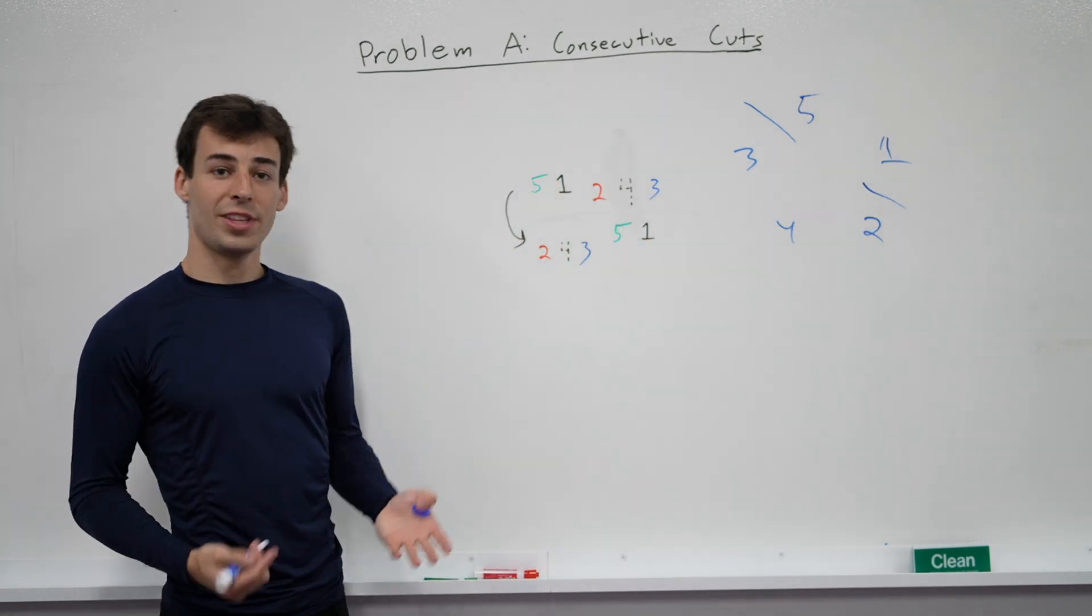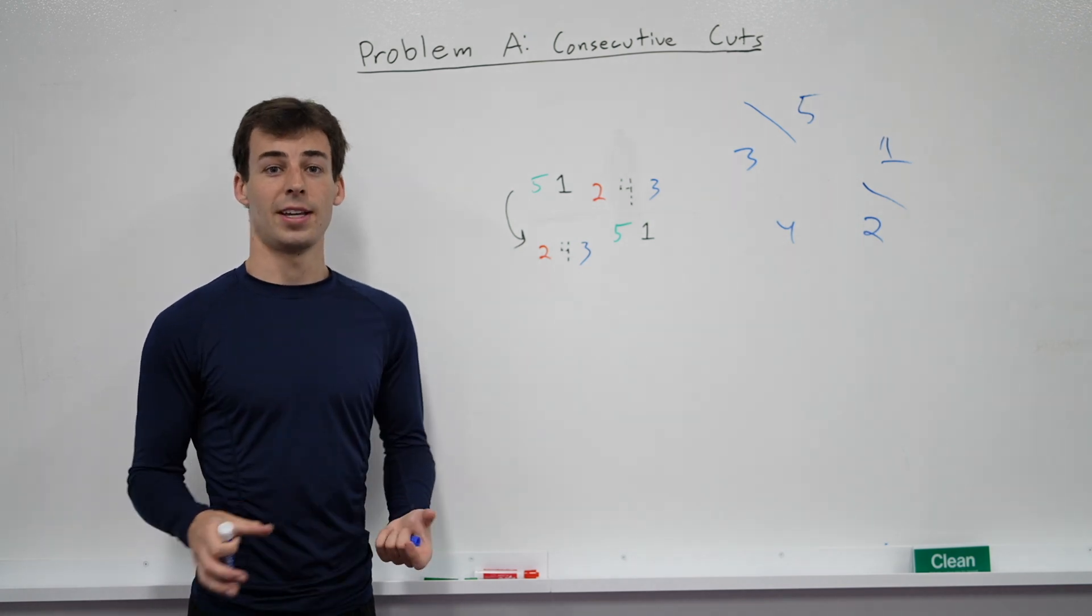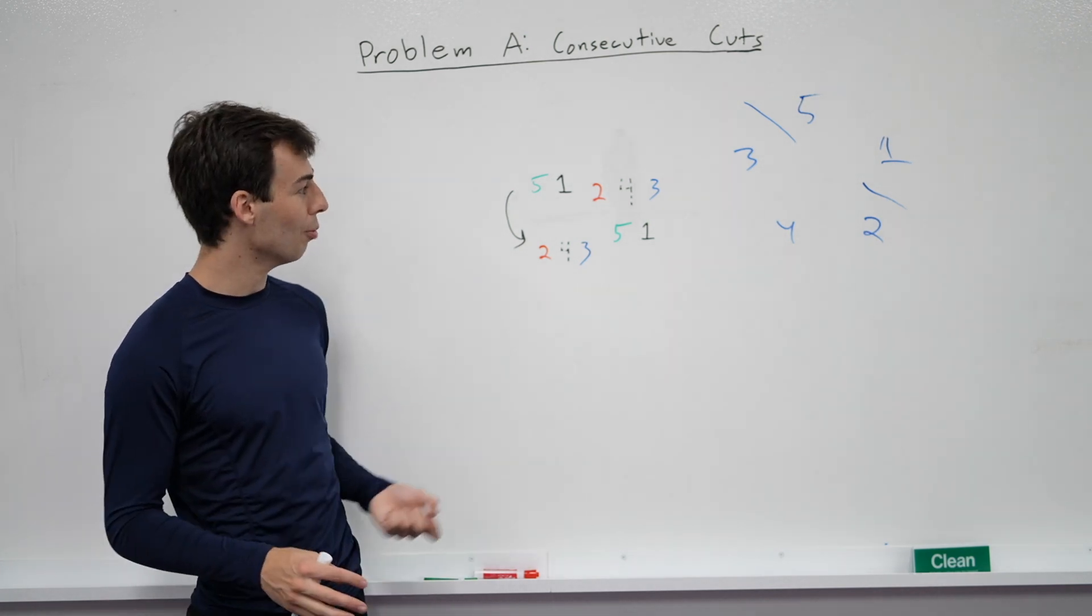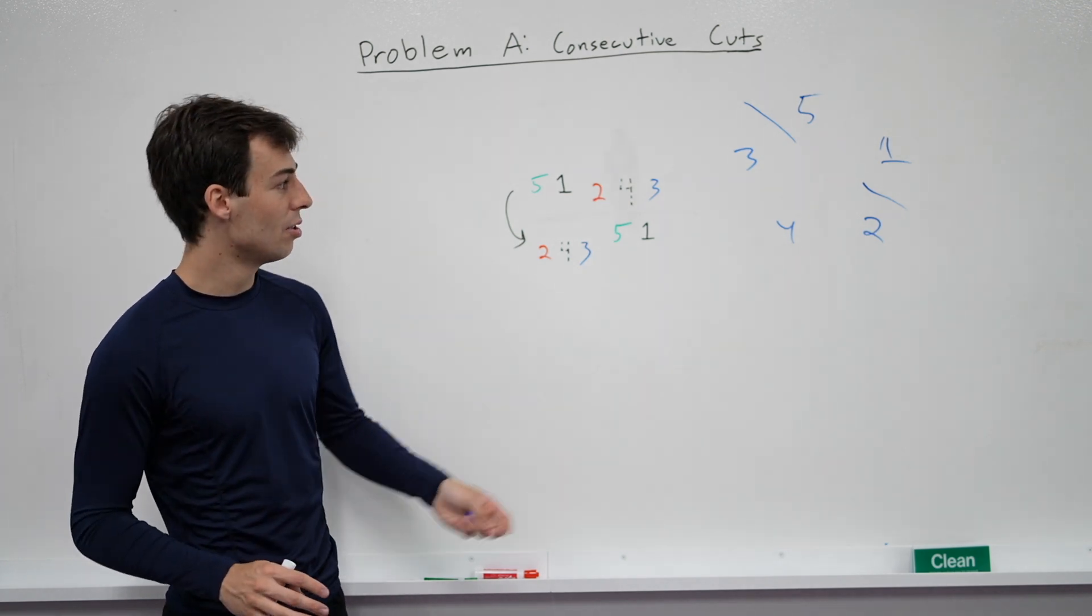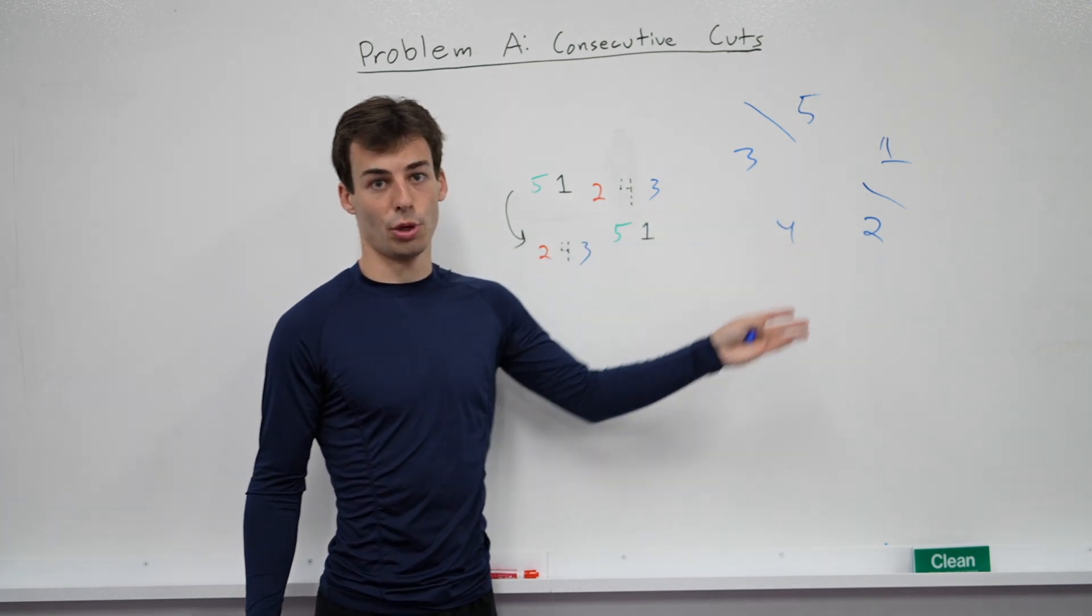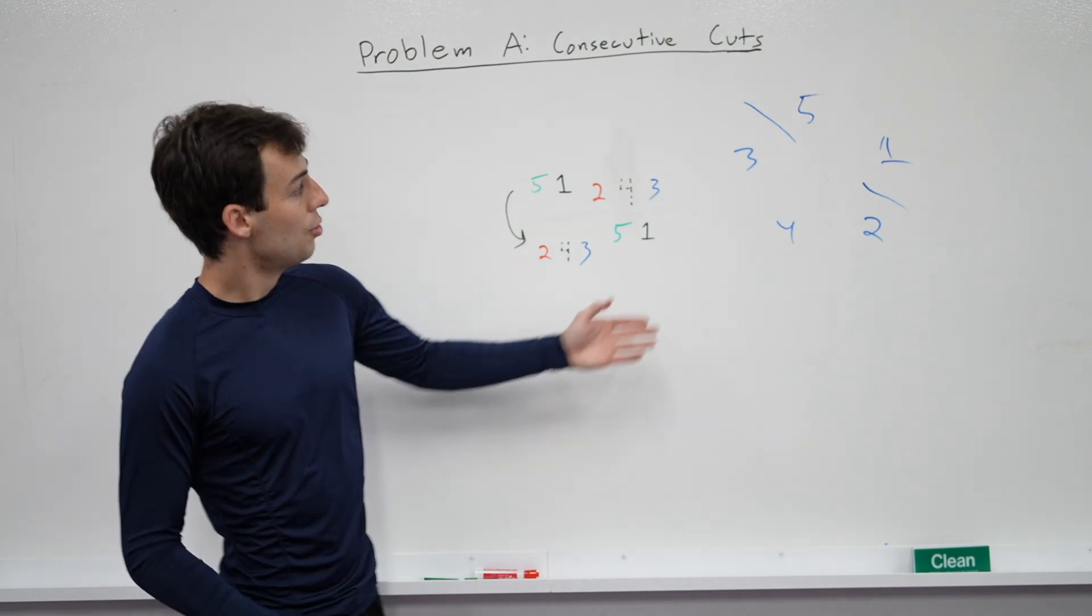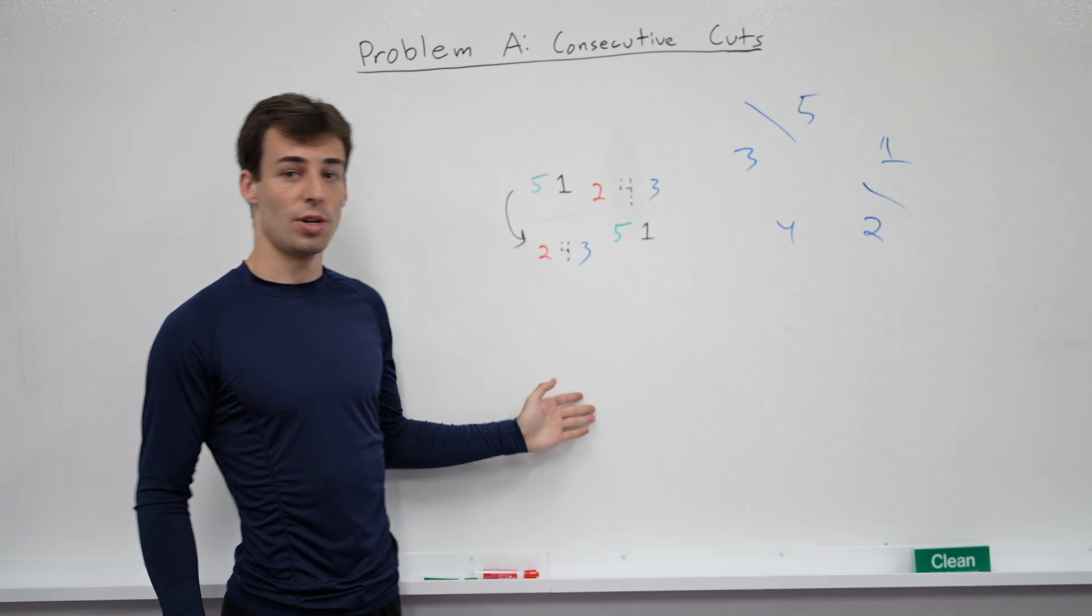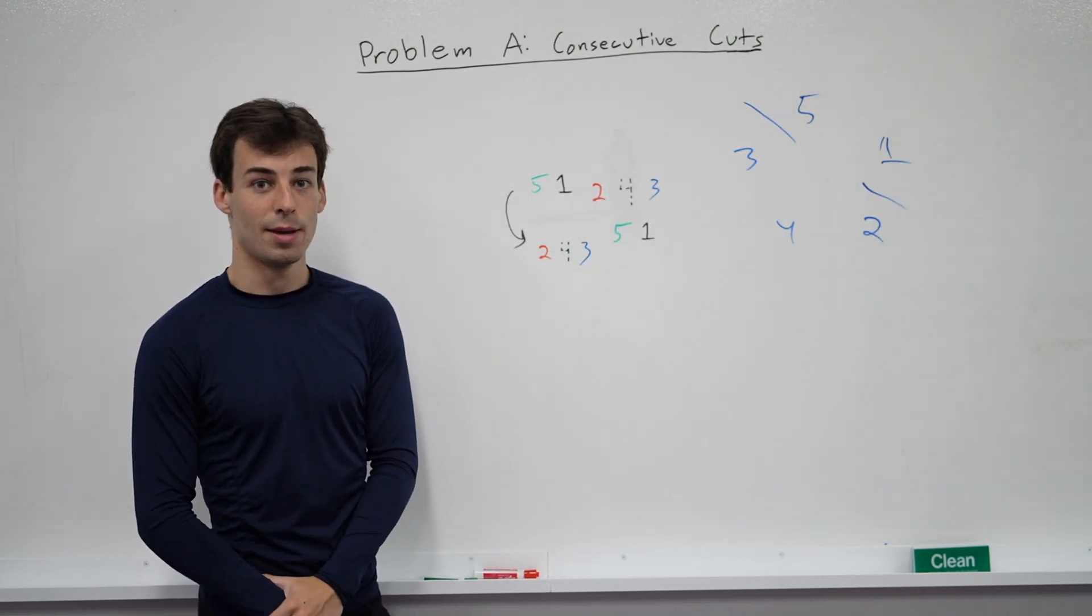So an easier way of thinking about the problem is rather than having this array which we're modifying in some rather complex way, we're moving a bunch of elements, changing a whole bunch of position-value pairs, we can just move the start pointer. Okay, so if this is the problem, the question is just, can an array turn from one thing to another thing if we move the start position k times?